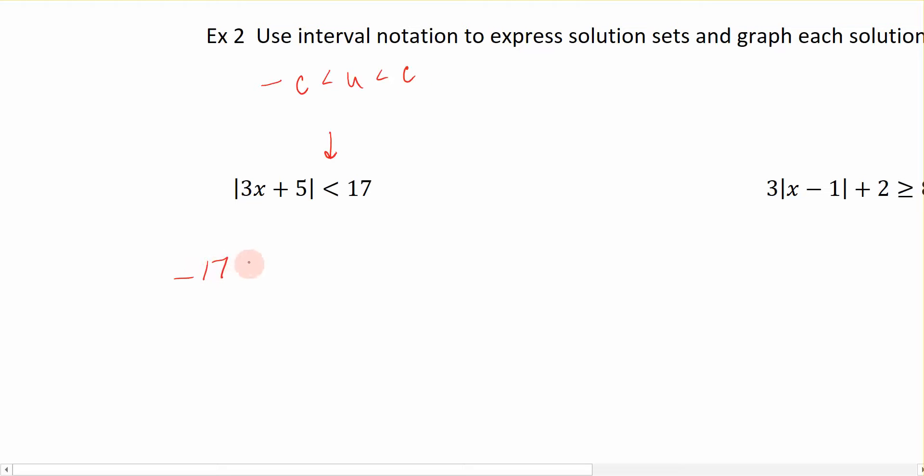So I have negative 17, which is less than, now we can take out the absolute value part, which is 3x plus 5, and then we bring the 17 down. So we sandwich the absolute value in the center between the positive and negative of its constant, and we solve from here.